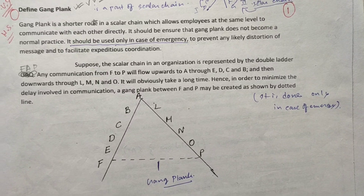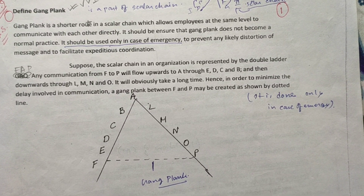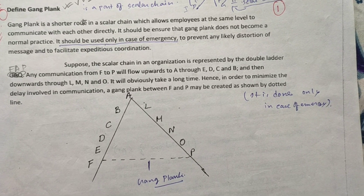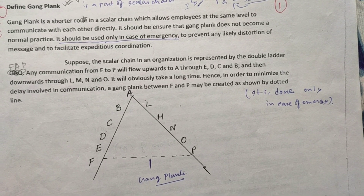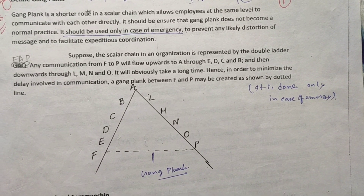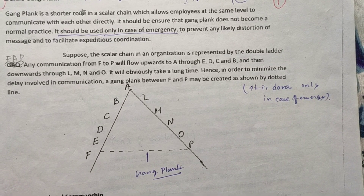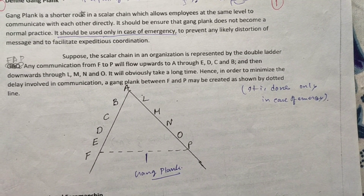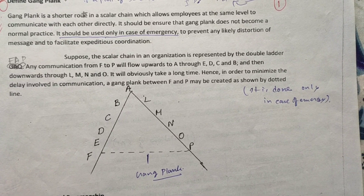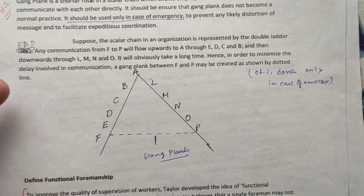It is used to prevent any likely distortion of the message and to facilitate expedient coordination. Suppose the scalar chain in an organization is presented by the double letter — any communication from F to P will flow upwards to A through E, C, D and B, and then downwards through L, M, N and O. It will obviously take a long time. Hence, in order to minimize the delay involved in communication, a gang plan between F and P may be created as shown by the dotted line in this diagram.